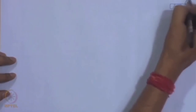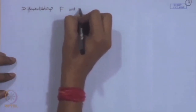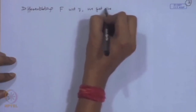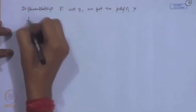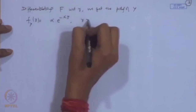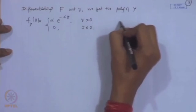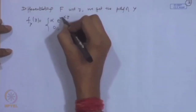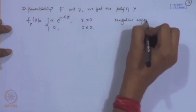Differentiating the CDF with respect to y gives the probability density function of y: f(y) = α*e^(−αy) for y > 0, and 0 for y ≤ 0. This is called the exponential distribution, and since the exponent appears as a negative term, it is also called the negative exponential distribution.